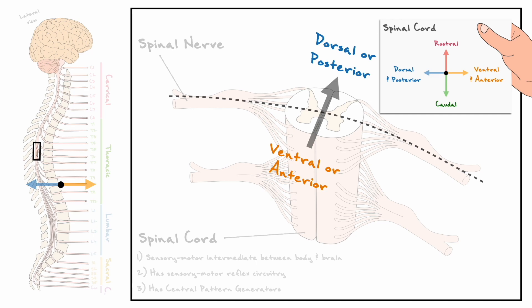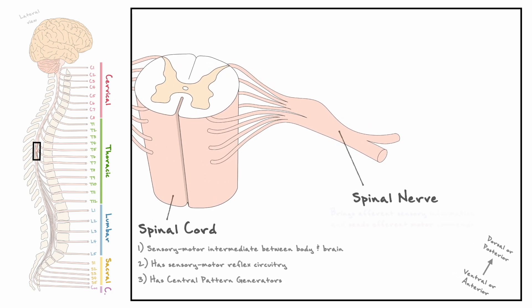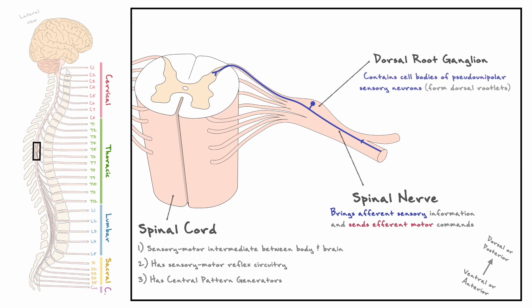Spinal nerves carry both afferent sensory information towards the spinal cord and efferent motor information away from the spinal cord. Starting with afferent sensory information, when it travels towards the spinal cord, it reaches a structure called the dorsal root ganglion, which is an enlarged structure that contains the cell bodies, or cell somas, of the pseudo-unipolar sensory neurons, shown in blue. After crossing the dorsal root ganglion, the structure branches into what are called dorsal rootlets, highlighted in yellow, and these rootlets end up conducting the afferents into the spinal cord.